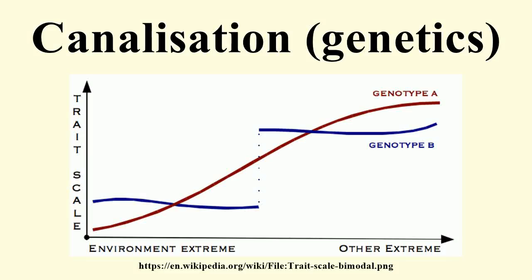Canalization is a measure of the ability of a population to produce the same phenotype regardless of variability of its environment or genotype. In other words, it means robustness.